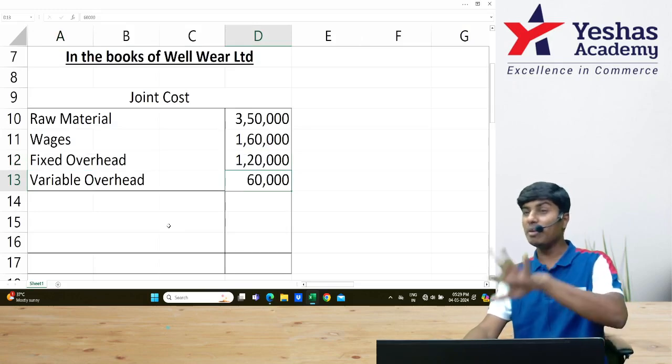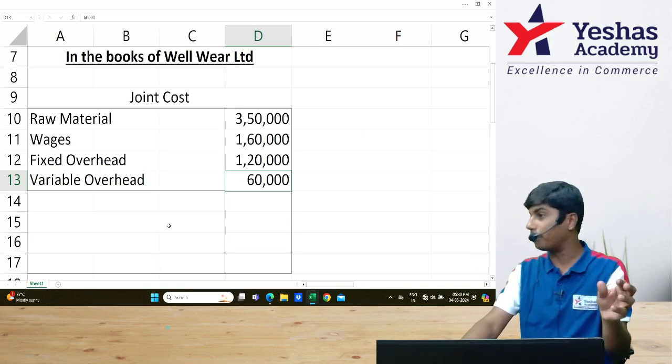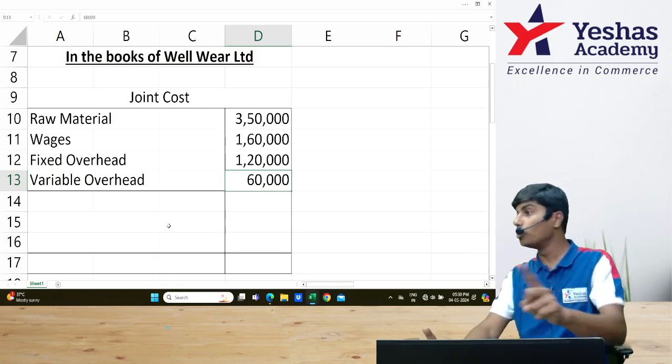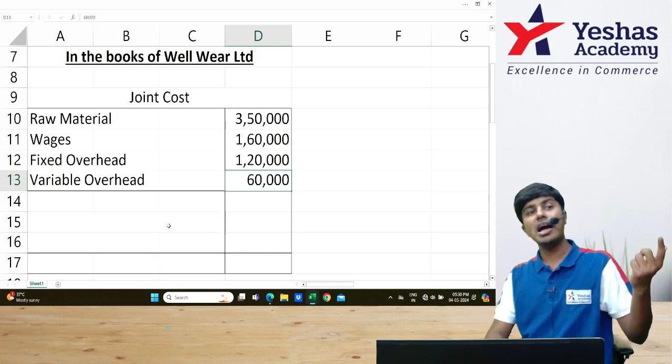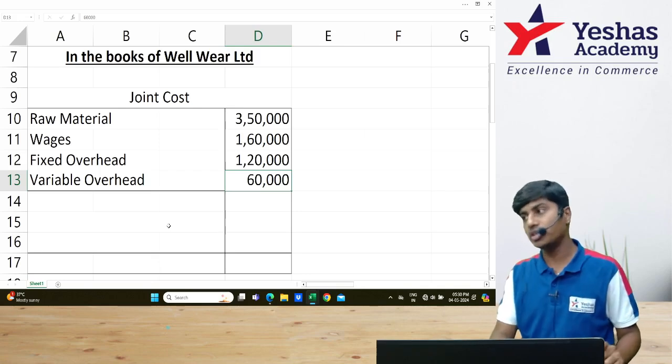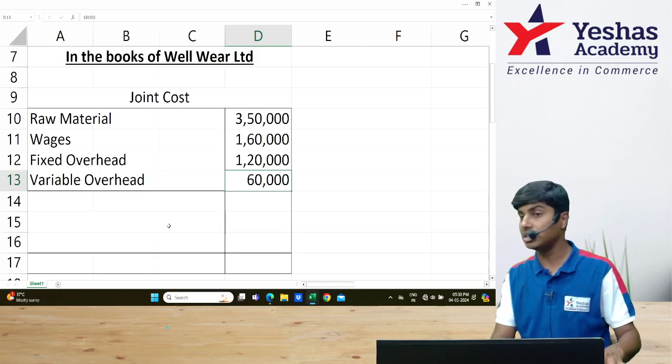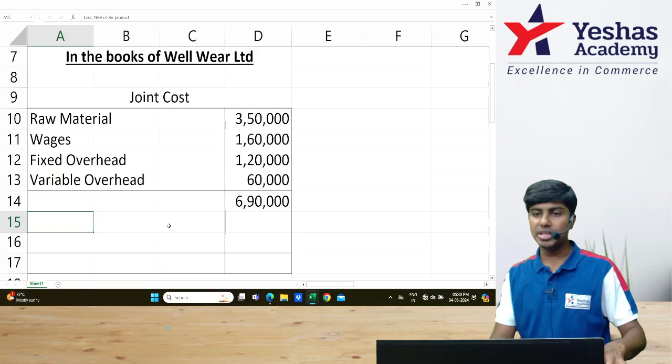This is joint cost before deduction of NRV of byproduct and before elimination of scrap. I cannot allocate this to both joint products. What I will allocate is after elimination of byproduct NRV and after elimination of scrap value. How much is 350 plus 160 plus 120 plus 60? ₹6,90,000.